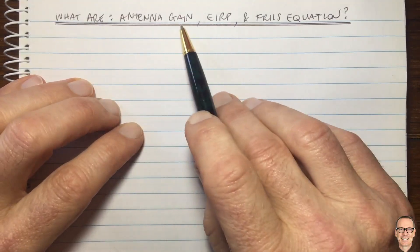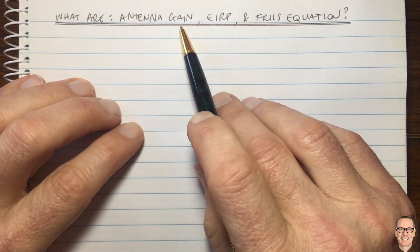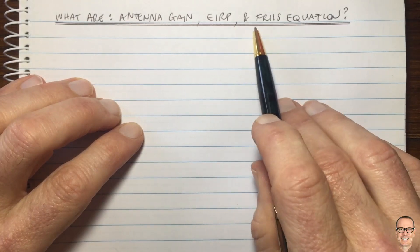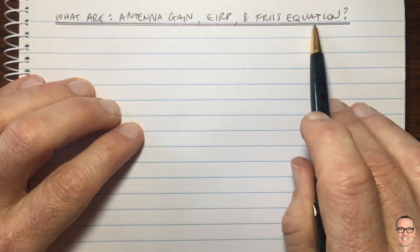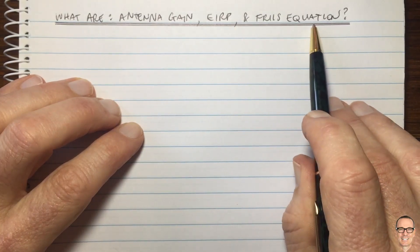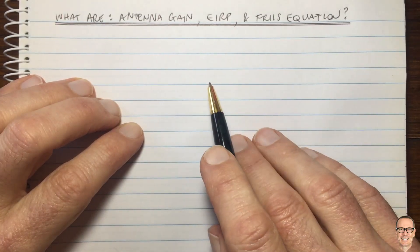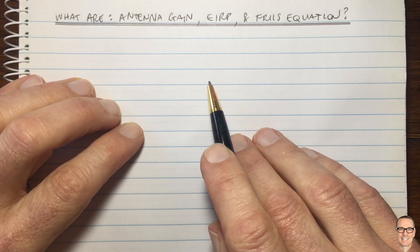So what are antenna gain, EIRP, and the Friis equation when we're talking about wireless communications?